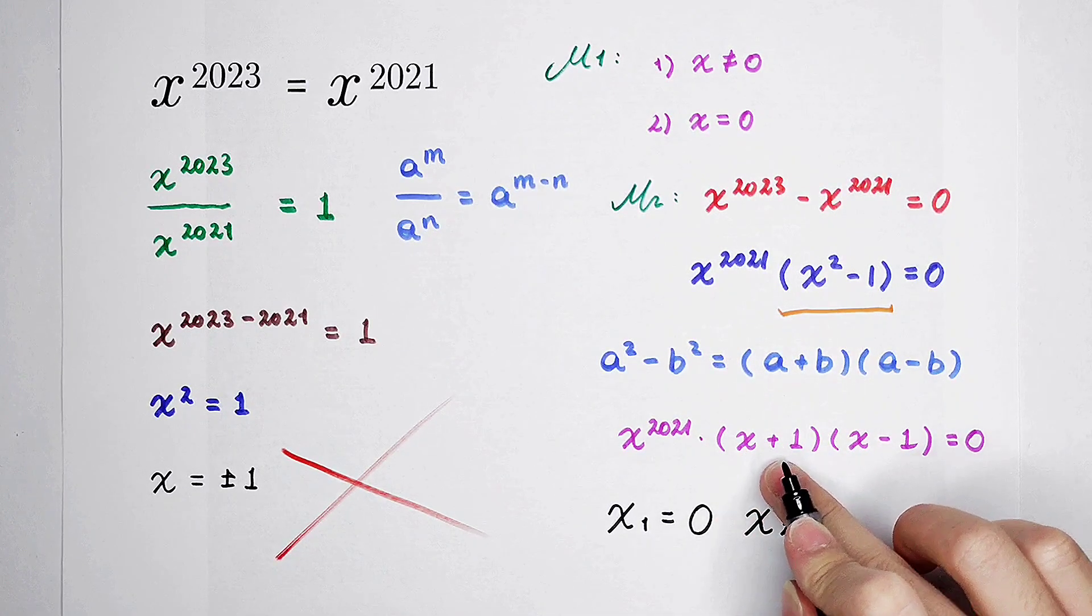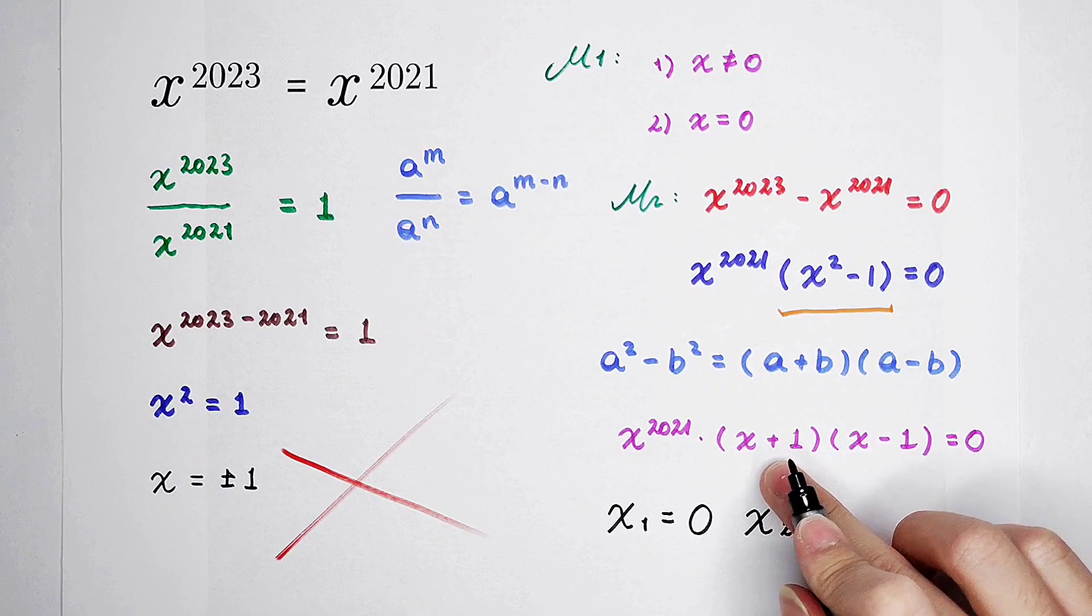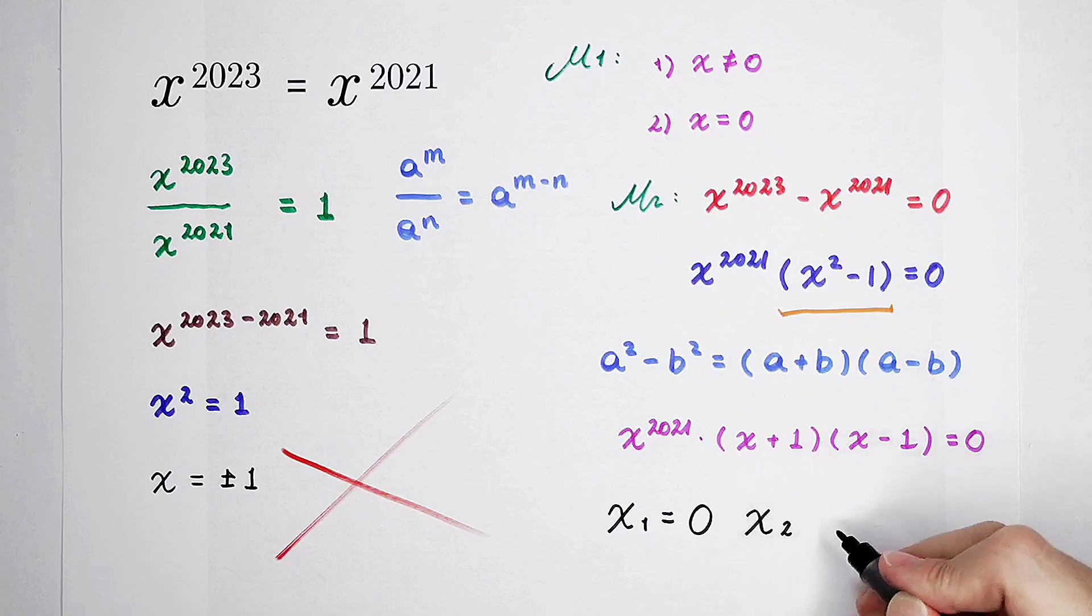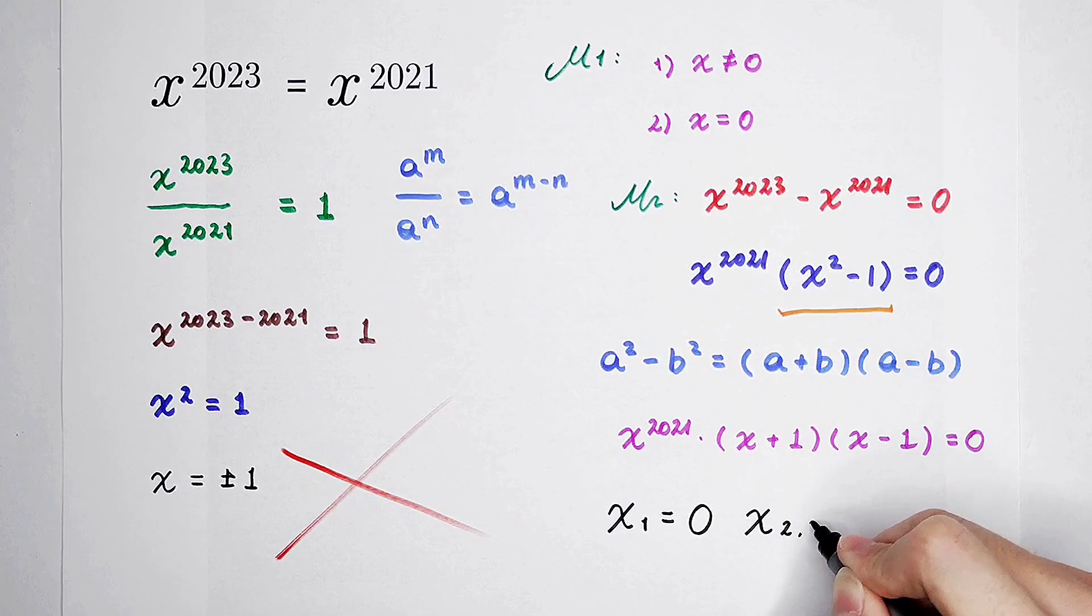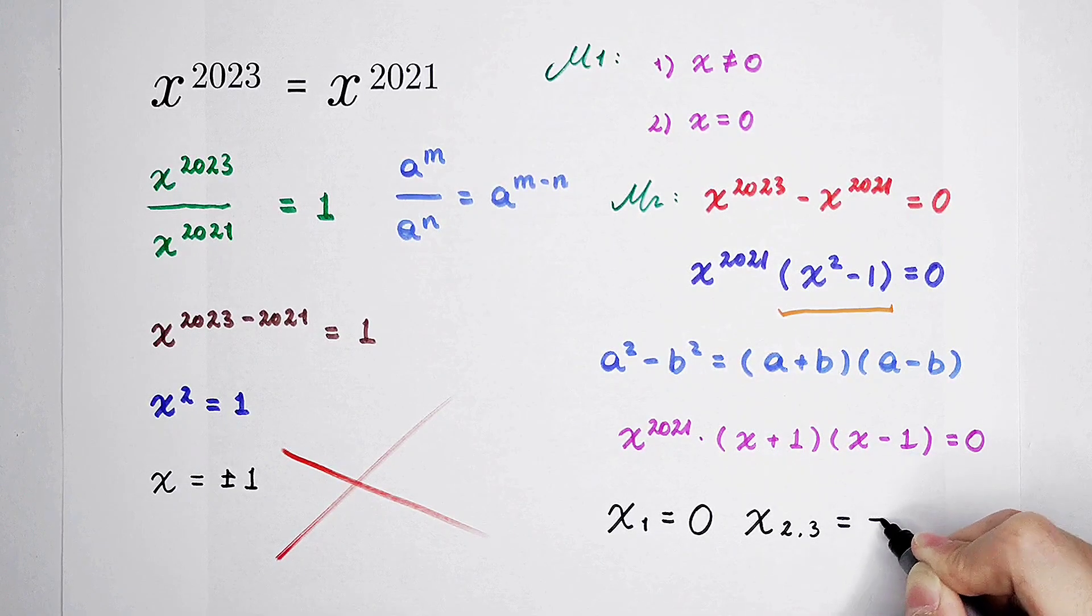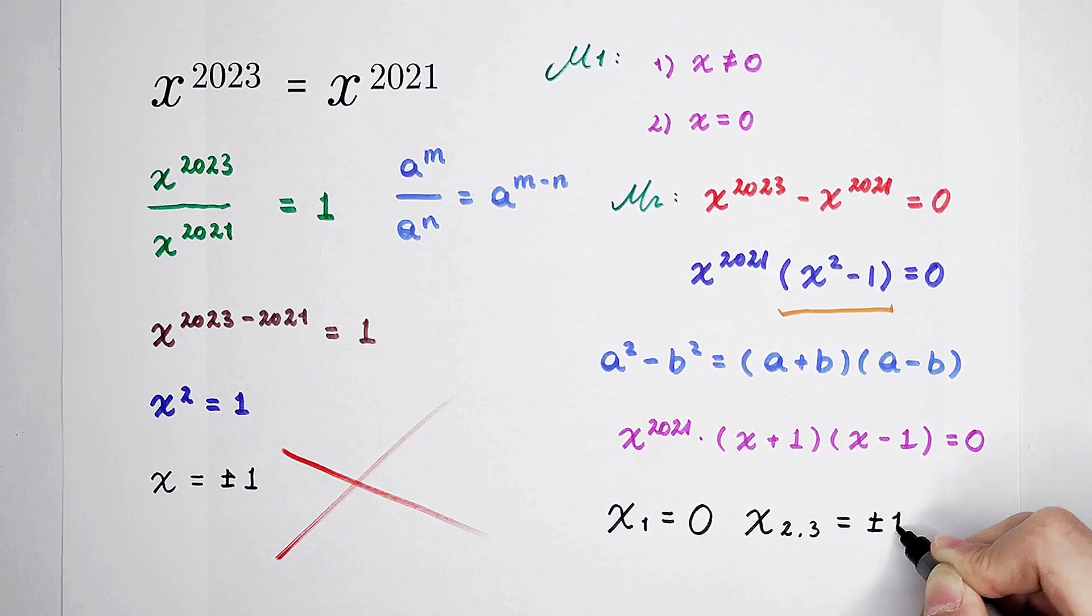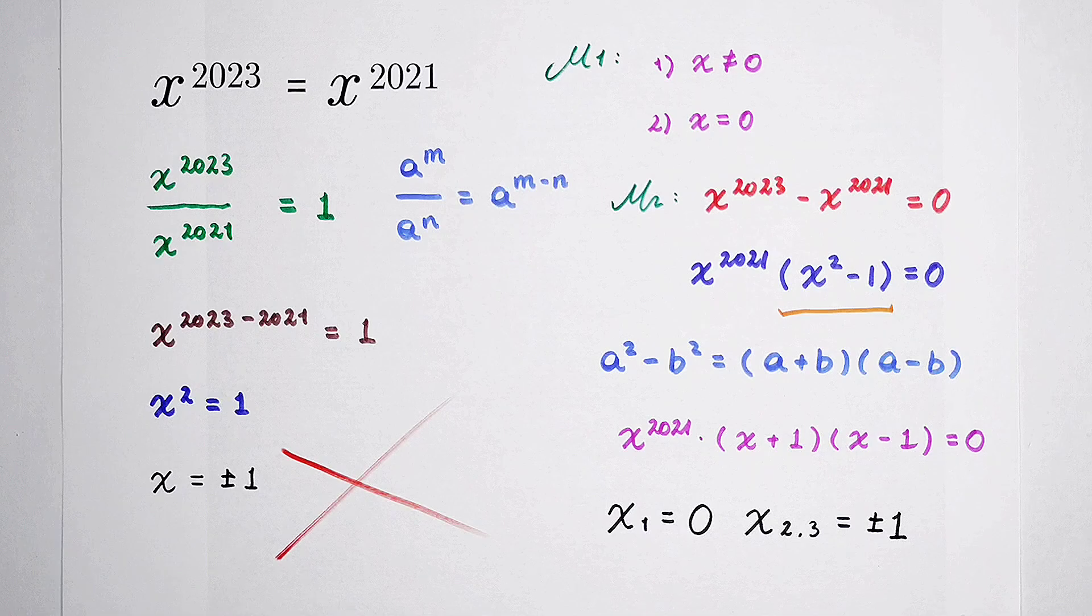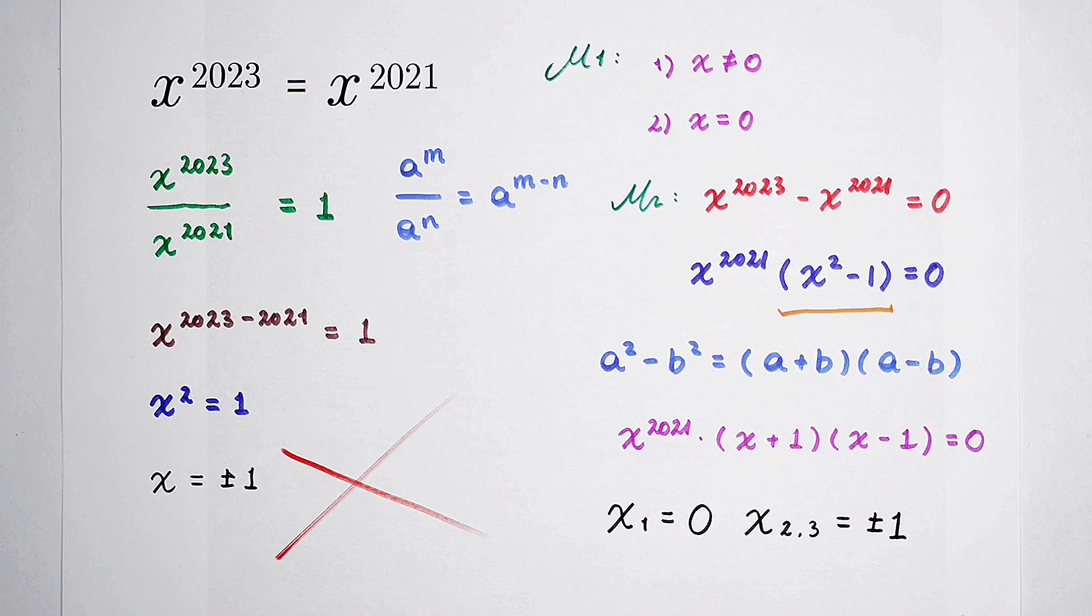x2 is when x plus 1 is 0 and x is negative 1. And the third case is when x minus 1 is equal to 0 and x3 is 1. So, x1 is 0 and x2, 3 is positive and negative 1.